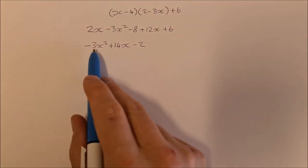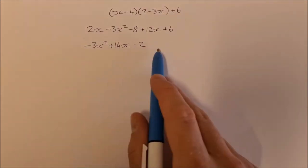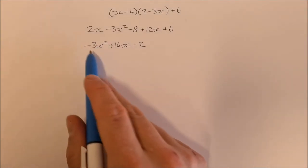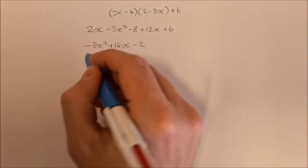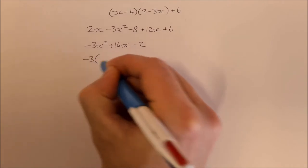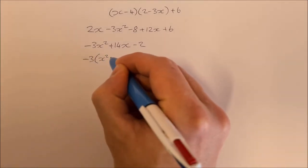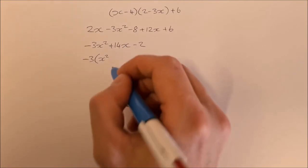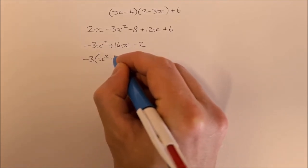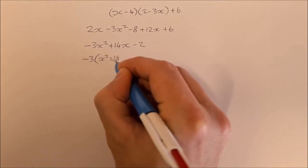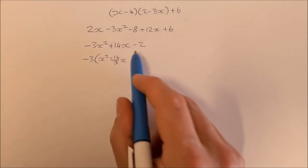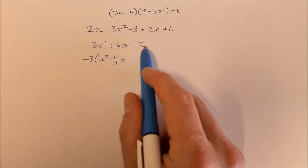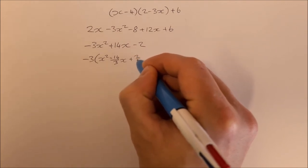Now when we want to complete the square, we need to have a leading coefficient of 1. So I'm going to factor out this minus 3, and I'll be left with x squared. And then if I take minus 3 as a factor of 14, that's going to be minus 14 over 3 x. And then if I take a factor of minus 2, that's going to be plus 2 over 3.